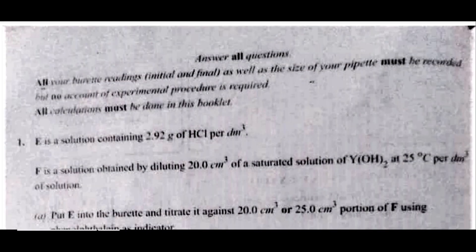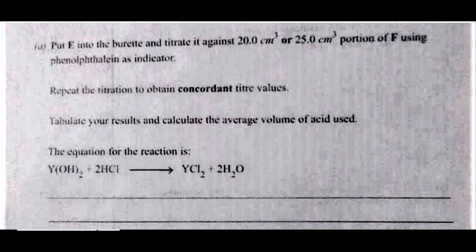The first question: all your burette readings, initial and final, as well as the size of your pipette must be recorded, but no account of experimental procedure is required. All calculations must be done in this booklet. Question 1: E is a solution containing 2.92 grams of HCl per dm³, while F is a solution obtained by diluting 20.0 cm³ of a saturated solution of YOH₂ at 25°C per dm³ of solution. Put E into the burette and titrate it against 20.0 cm³ or 25.0 cm³ portions of F using phenolphthalein as indicator. Repeat the titration to obtain concordant titre values. Tabulate your results and calculate the average volume of acid used. The equation for the reaction is: YOH₂ + 2HCl → YCl₂ + 2H₂O.